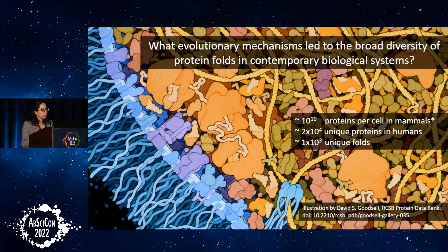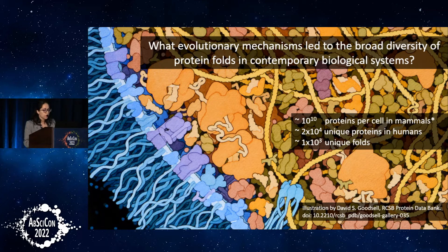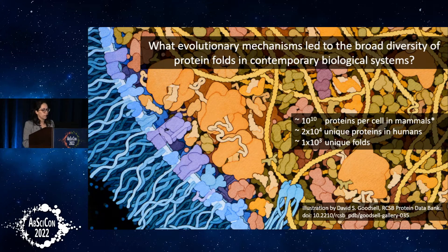Thank you. I'm going to talk about protein fold evolution — how the structure of proteins changes. In this work, we wanted to understand the evolutionary mechanisms that led to the diversity of protein folds in contemporary biology. In a human proteome there are around 20,000 proteins, and these are made of around 1,000 unique structural units. 1,000 is a very small number compared to the total proteins in a single human cell, and also small when you think these are the product of 3.8 billion years of evolution.